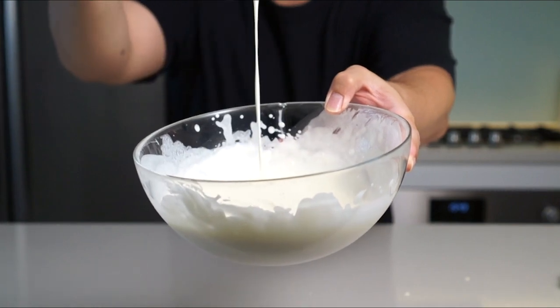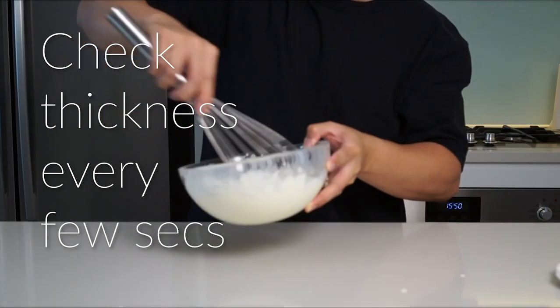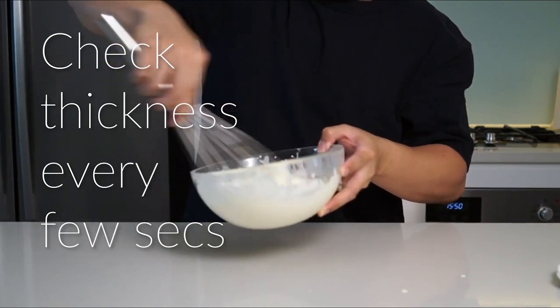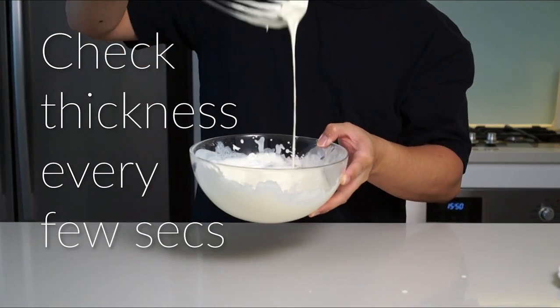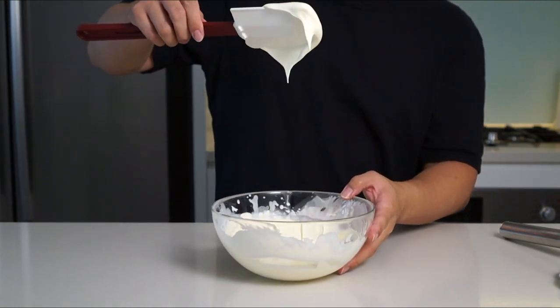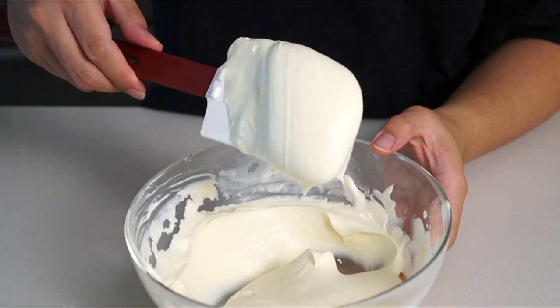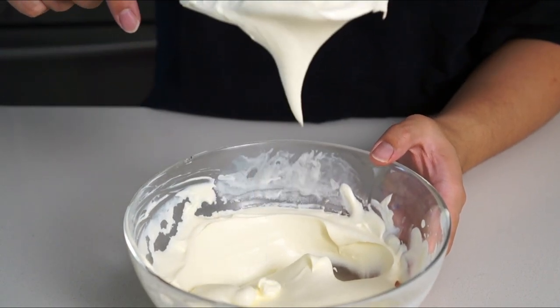Here the cream is starting to get a little thicker. Once you reach this stage, you want to whisk in shorter intervals, about five to ten seconds, so you can check the consistency. Here's how you tell you have the right consistency.